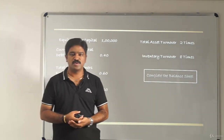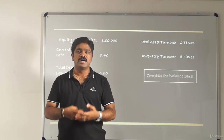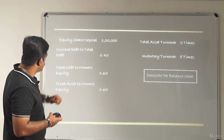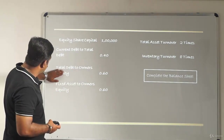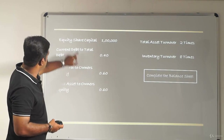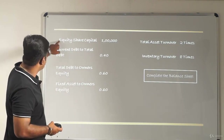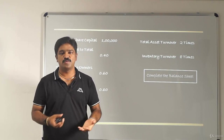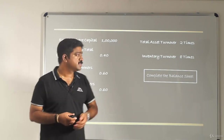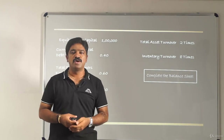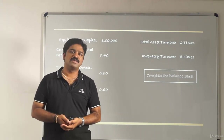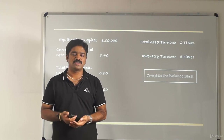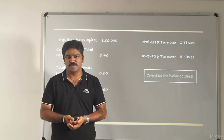Using total assets turnover, we can find sales. But first we need total assets: equity (100,000) plus total debt (60,000) gives total liabilities of 160,000, which also equals total assets. Applying the total assets turnover ratio then gives us sales. We also need sales to find inventory using the inventory turnover ratio, whose formula is cost of goods sold divided by average inventory.